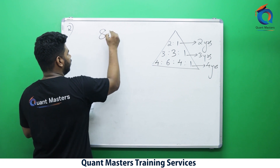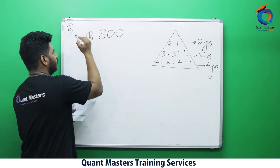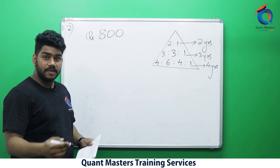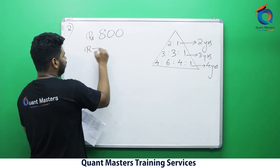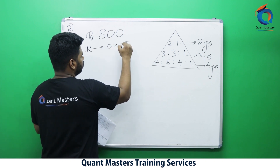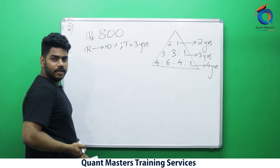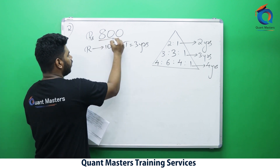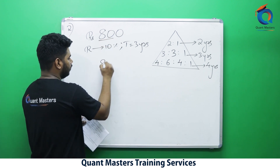New example: sum is 800 rupees at 10% per annum for 3 years. Rate is 10%, time is 3 years, so calculate three times. 10% of 800 is 80. 10% of 80 is 8. 10% of 8 is 0.8.